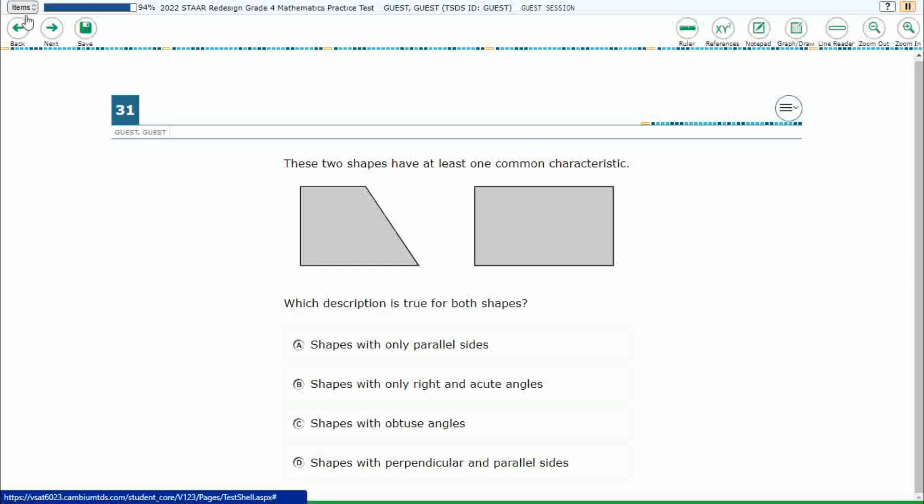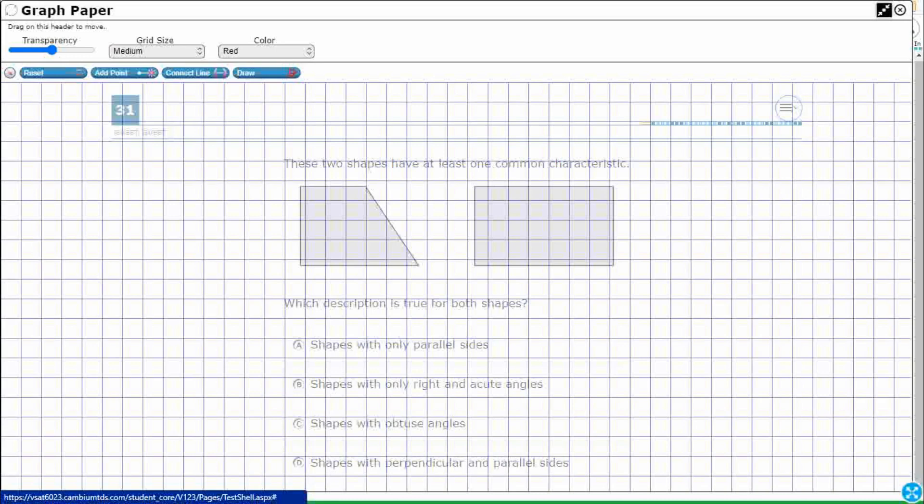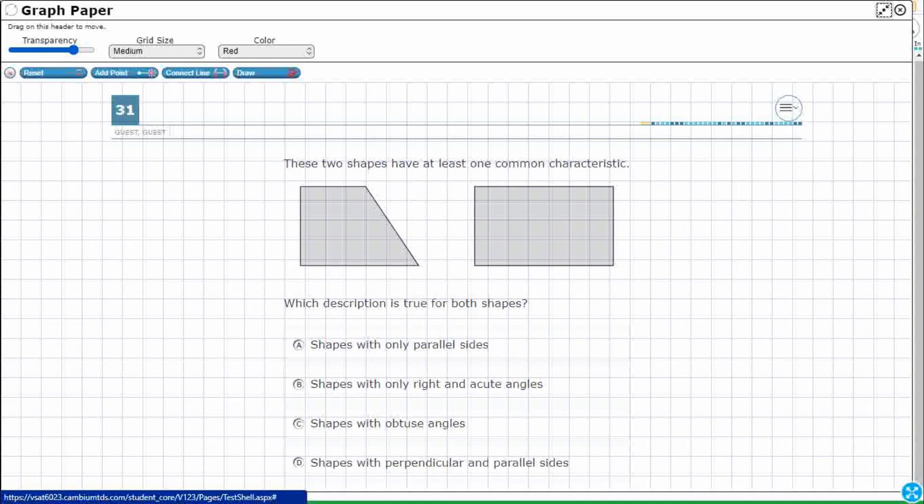So we've got two different shapes and we simply need to find one statement that is true for both of them. Let's open up our graph draw feature and we're going to extend it out so it takes up the whole screen, increase the transparency so we can see what's happening behind there.